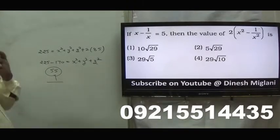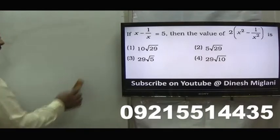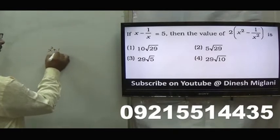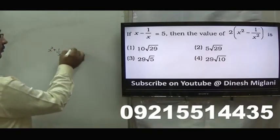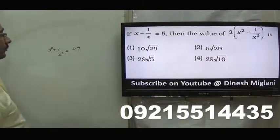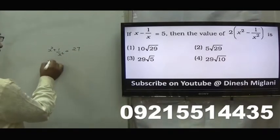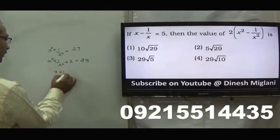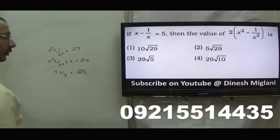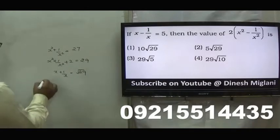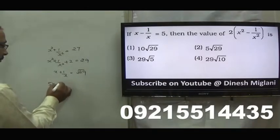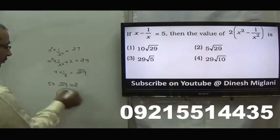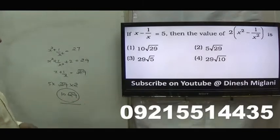x minus 1 by x equal to 5. I need x square minus 1 by x square. Squaring both sides, x square plus 1 by x square equal to 25 plus 2, which is 27. Adding 2 to both sides, x square plus 1 by x square plus 2 equal to 29. So I can say x plus 1 by x equal to root 29. Now I need x square minus 1 by x square. x plus 1 by x is root 29, x minus 1 by x is 5. That gives me 10 root 29. Hence, answer to my question is first one, 10 root 29.